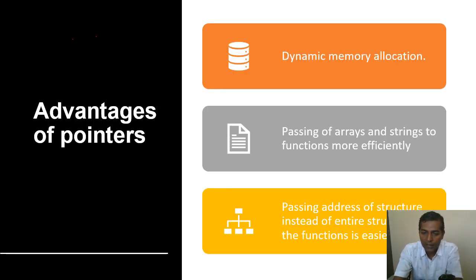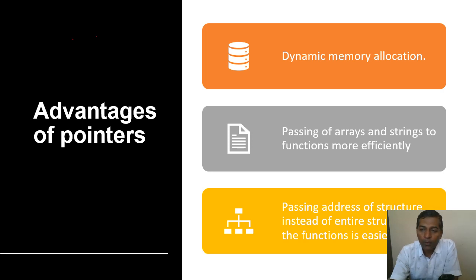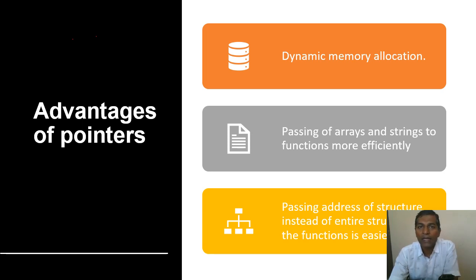There are a number of advantages of pointers. First, dynamic memory allocation uses pointers. Whenever we want to use dynamic memory in a program, we apply pointers. If a program needs to generate a new variable at runtime — meaning during program execution — and new data storage is required at execution time, then we use pointers or dynamic memory allocation for creating that new data storage.